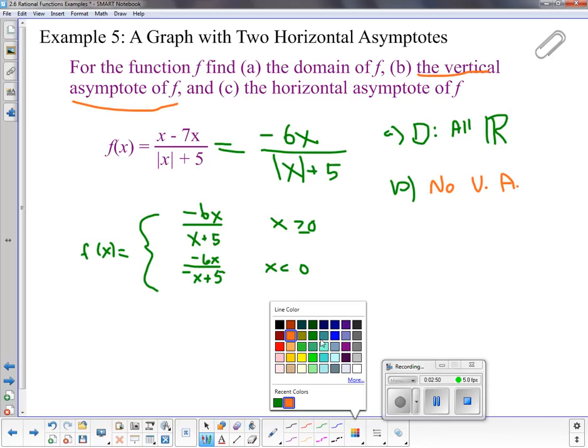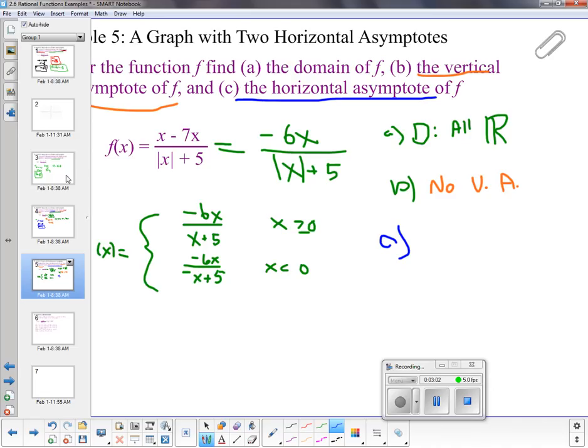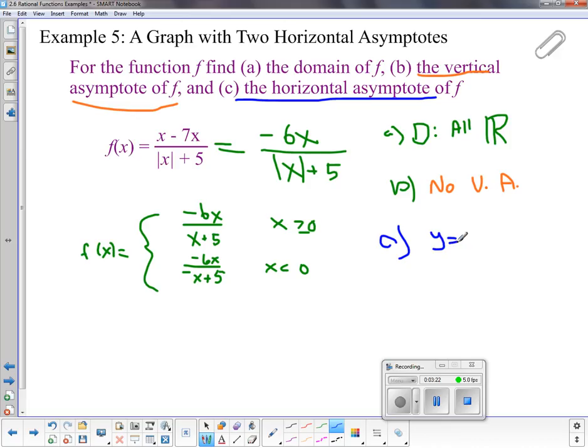So now we'd like to look at part C. Part C is the horizontal asymptote of that, f. So that's where we have to go back and look at our rules that we had before that aren't on this page. And the rules were if we take a look at the powers, so the degree of each. The degree of each are the same. If the degrees are the same, then we take the leading coefficients. So the leading coefficient up here is negative 6. So for this one, we have y equals negative 6 over 1, which is negative 6.